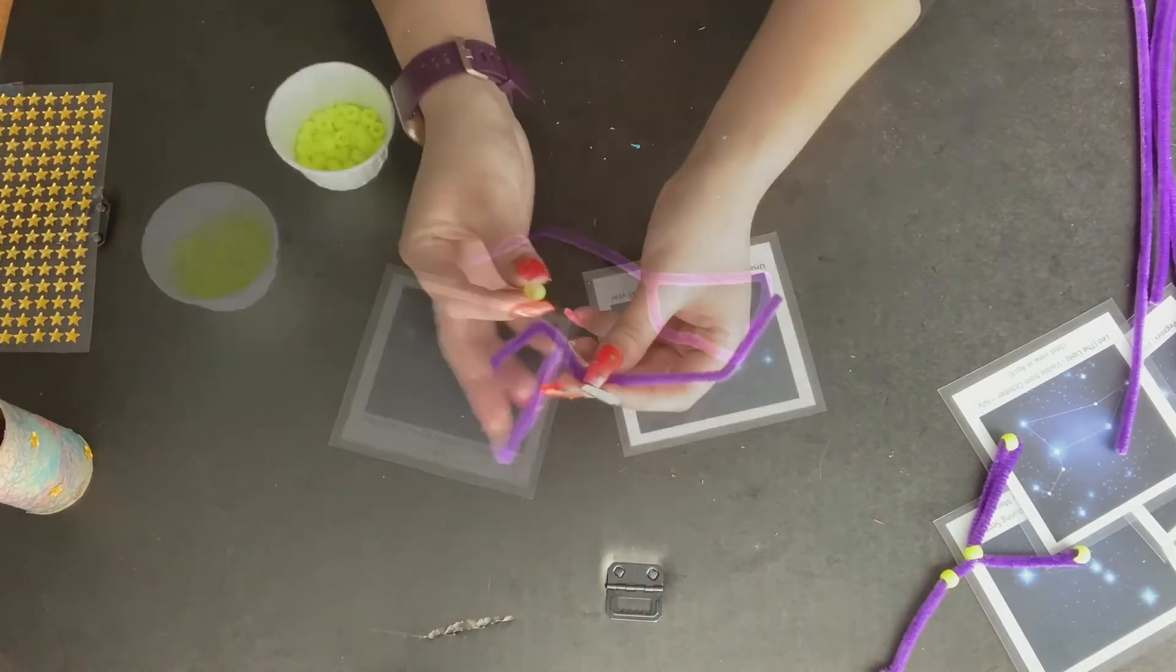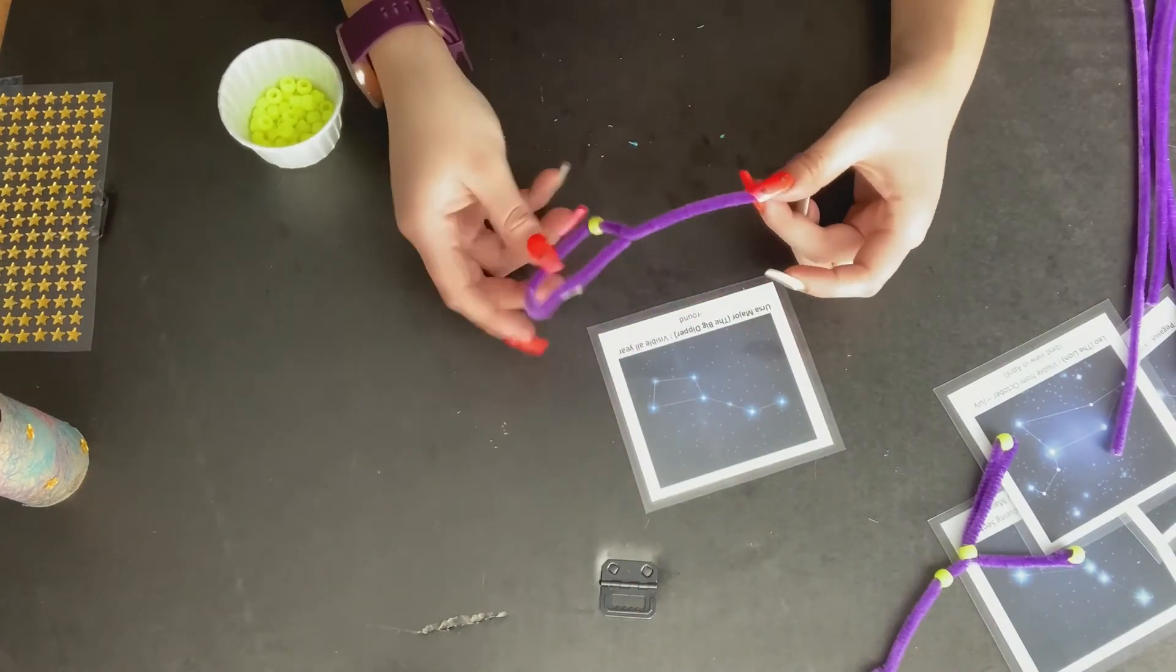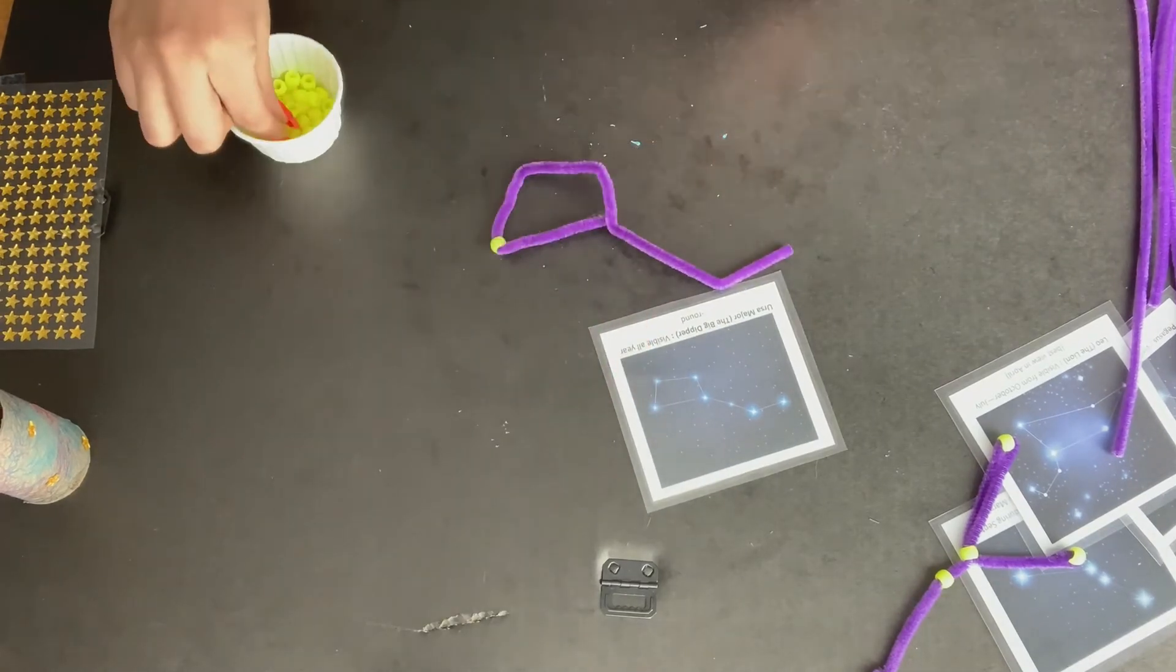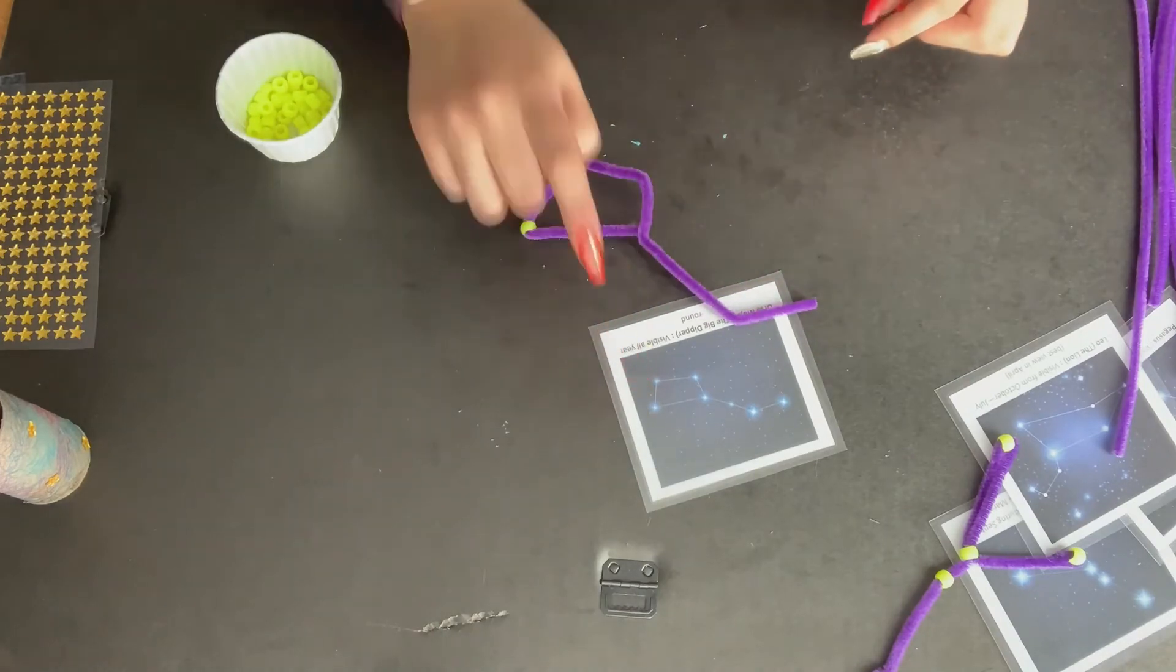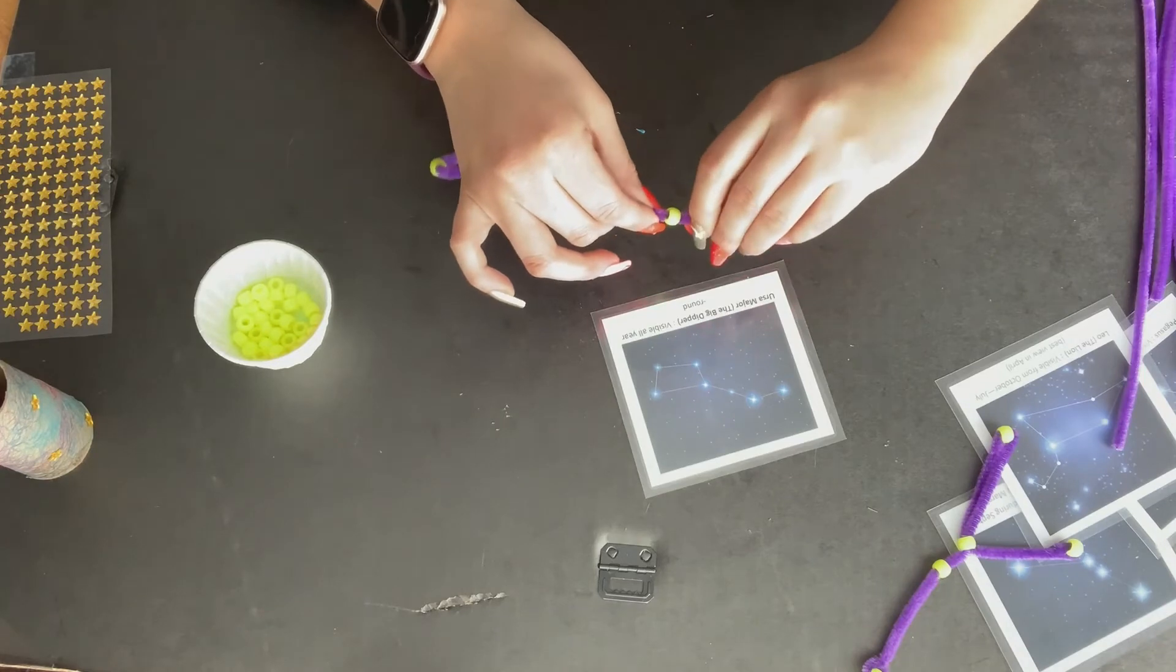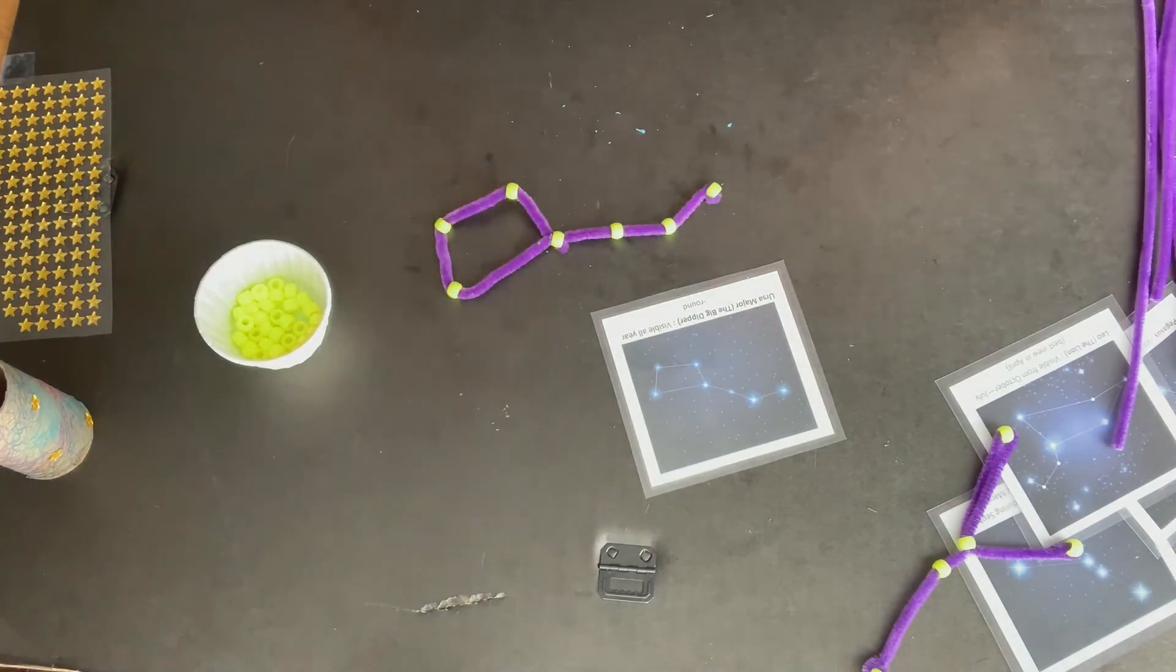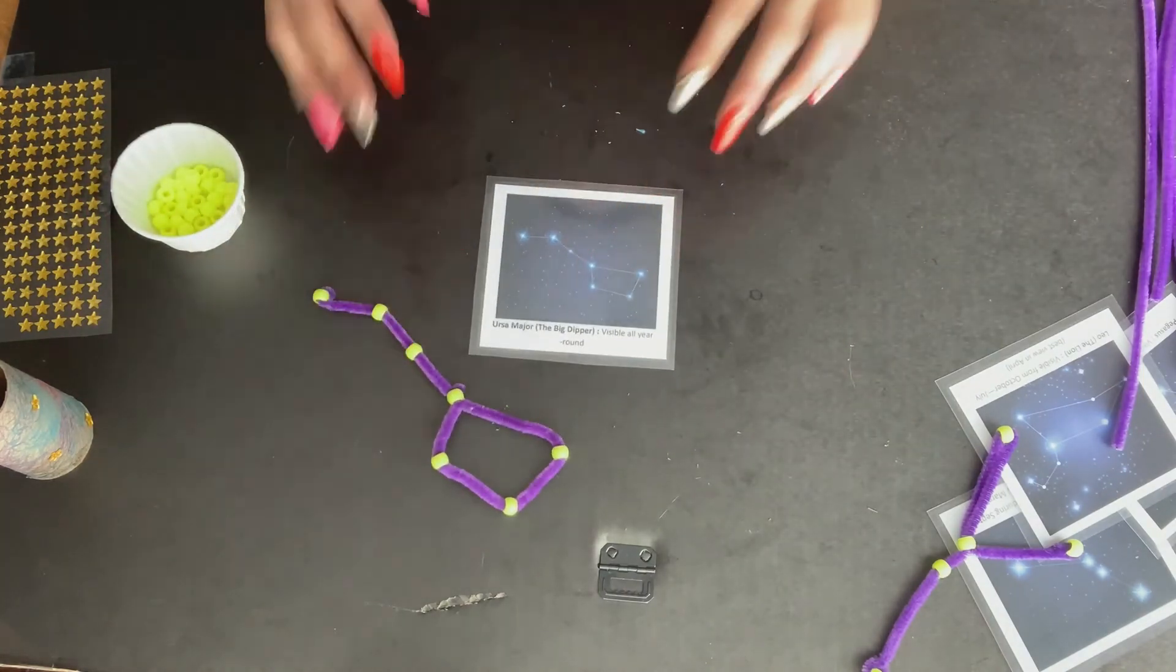So we have our shape. The next step is to add our seven beads to represent our seven stars. I'm using the card as my reference for the beads to match the position of the stars. And once I've finished, I now have an Ursa Major constellation.